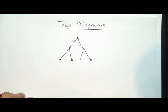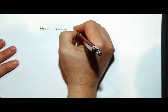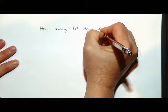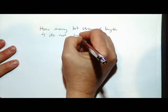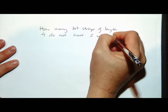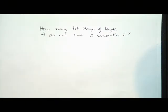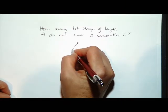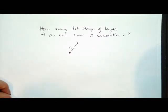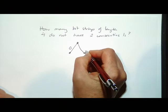For example, let's say the problem is: how many bit strings of length four do not have two consecutive ones? One way to draw a tree diagram for that is to start out with nothing in the string yet. If we go one way we start with a zero, and if we go the other way we have a one.